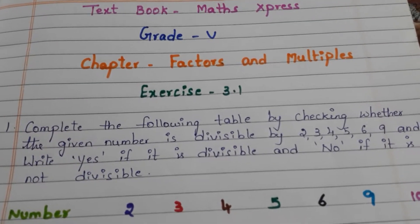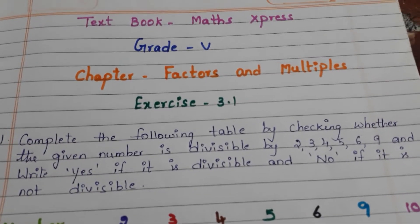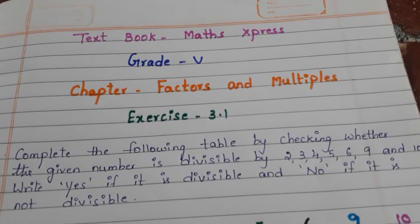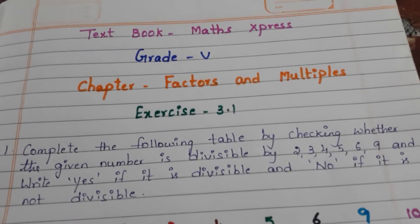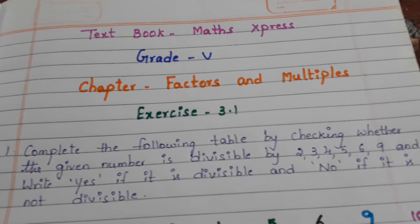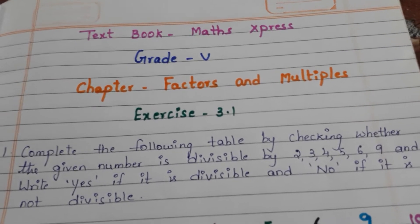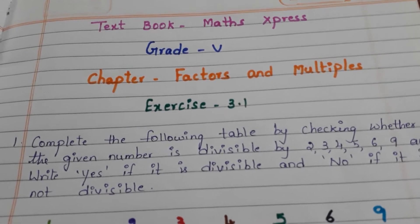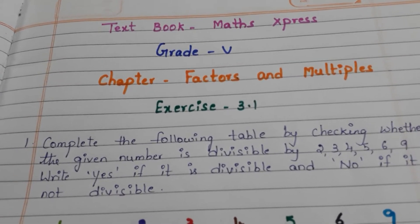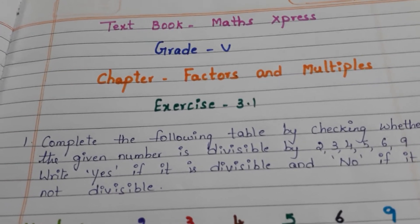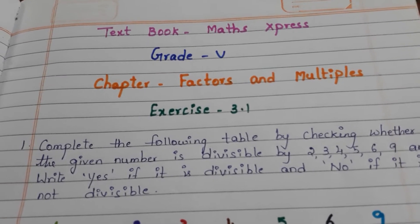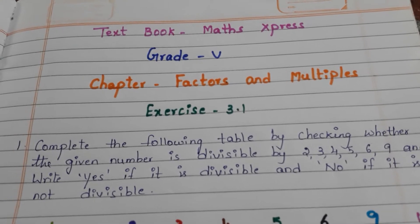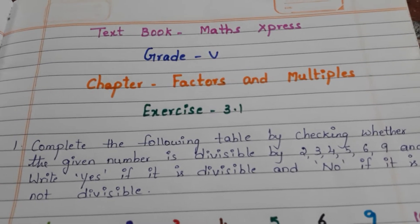Hi all, welcome back to my channel. In this video we are going to do exercise number 3.1 from the third chapter, Factors and Multiples, for grade 5 children from the textbook Maths Express. If anyone is watching my channel for the first time, please like, share and subscribe, and don't forget to click on the bell icon. Please click the links given in the description box for divisibility rules, factors and multiples, and remaining questions from this exercise.